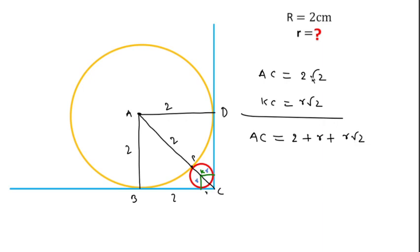And AC we have already found is 2 root 2 equals 2 plus r plus r root 2.